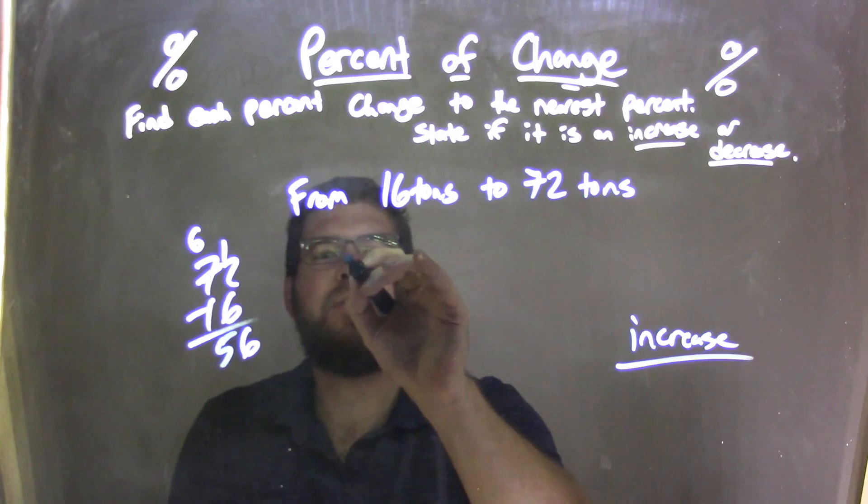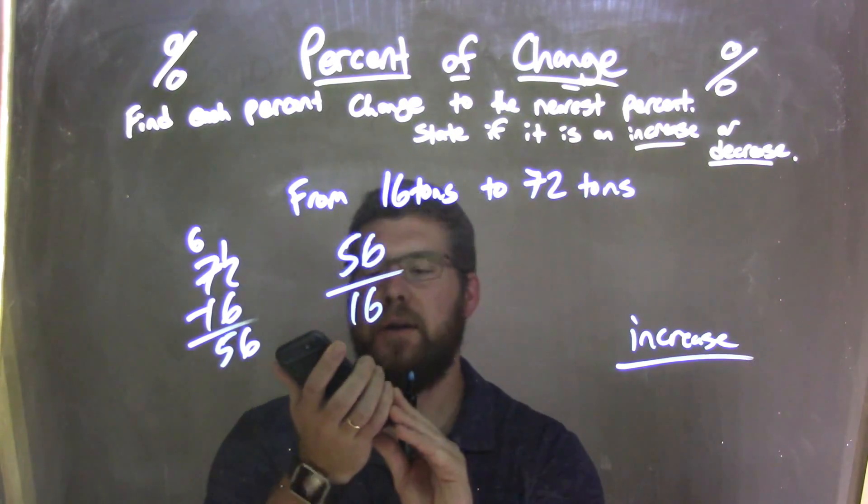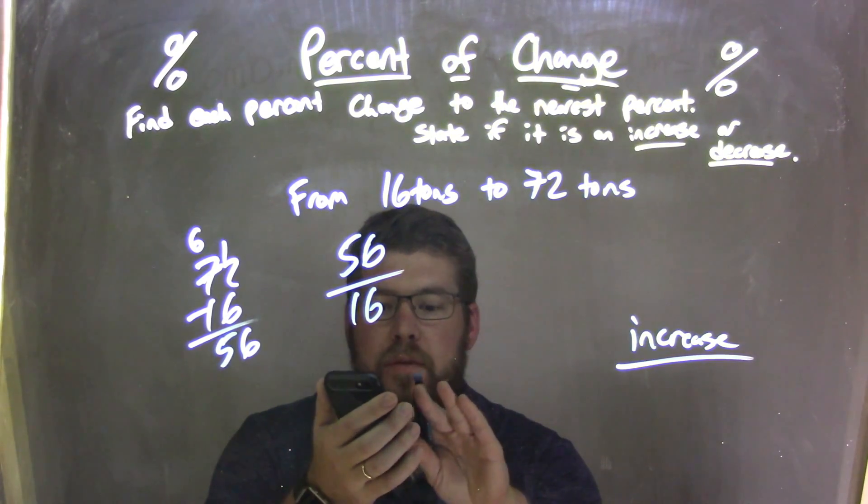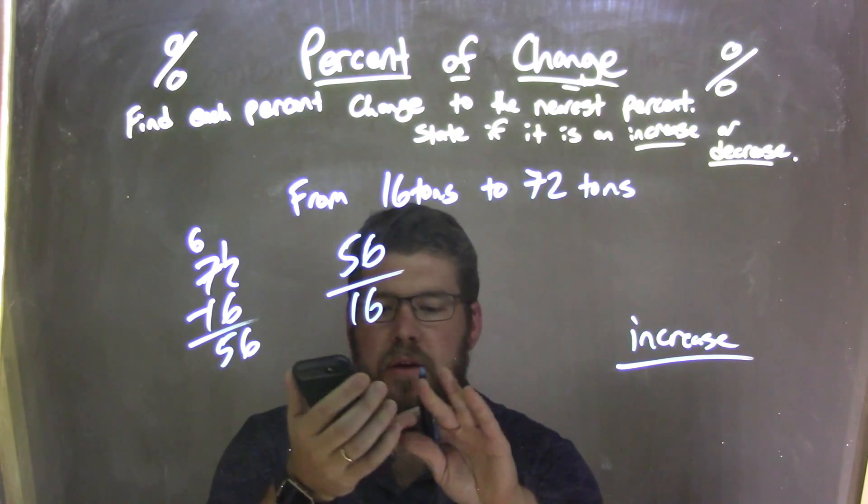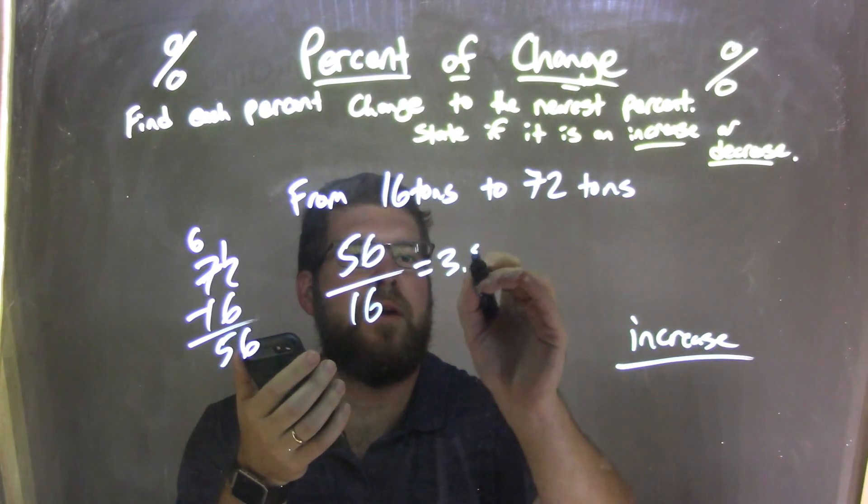We now take that 56 and divide it by our first number, which is 16. Use my good old calculator here. I take 56, divide it by 16, and we get 3.5. That's correct, yes, 3.5.